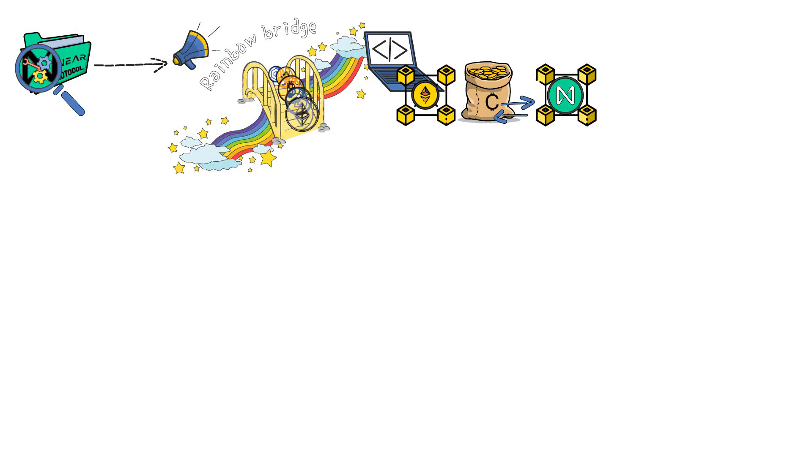Diving further into NEAR's inner workings, we face something that's known as the Rainbow Bridge. It's an application that enables token transfers between Ethereum and NEAR. First of all, as the name suggests, it's a crypto bridge.